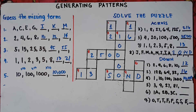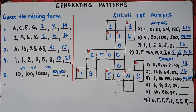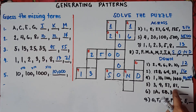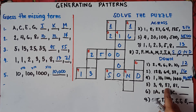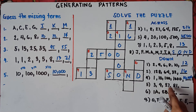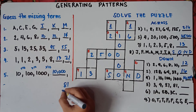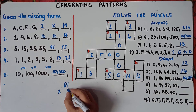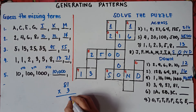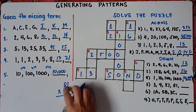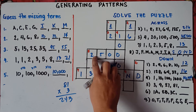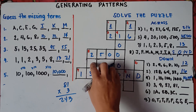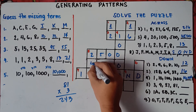For number 5 down: 3, 9, 27, 81. You multiply by 3. 3 times 3 is 9, 9 times 3 is 27, 27 times 3 is 81, 81 times 3 is 243. The answer for number 5 down is 243.